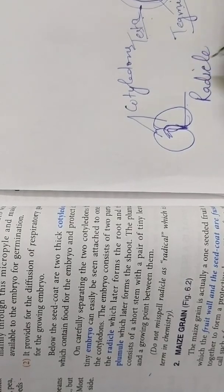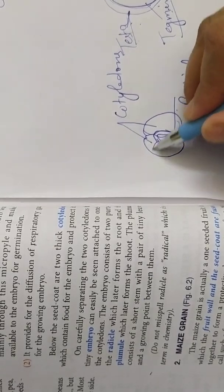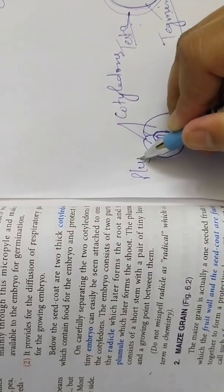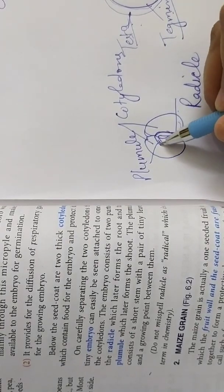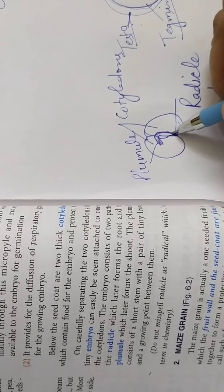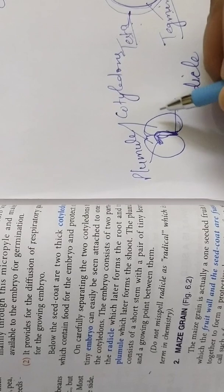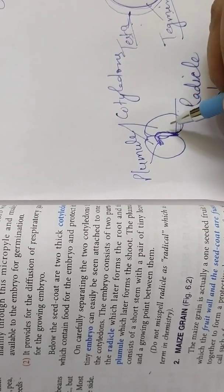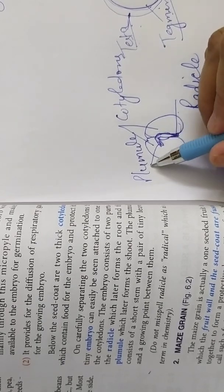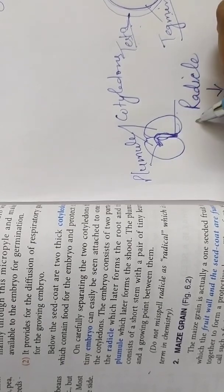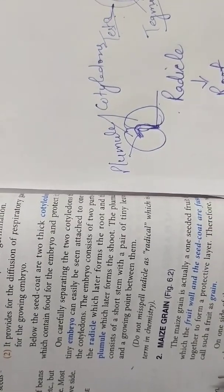Radicle which will form the root afterwards. And this is the plumule which will form the shoot. This is the embryo. Very carefully you have to see, otherwise it may break off. So you can see in any of the seeds, in gram seeds also, after soaking you can remove the outer covering and then just split open the two cotyledons and you can see the embryo inside and find out the two parts. Plumule which will form the shoot and radicle which will form the root. So this is all about the bean seed.